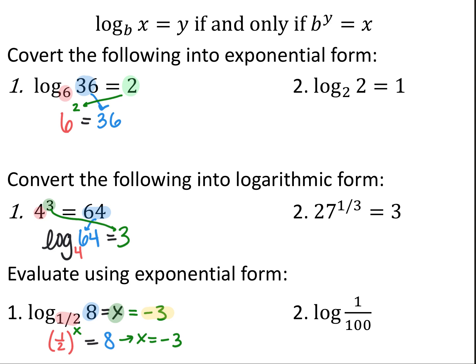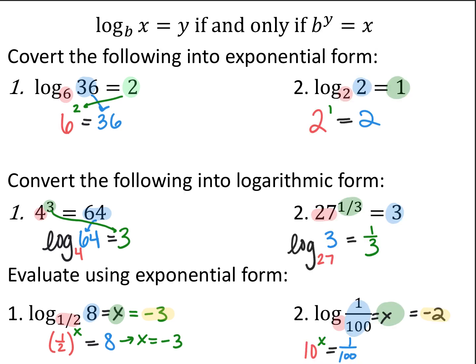Go ahead and try the other three. For the first one, we have log base 2 of 2 is equal to 1, and we want to convert that into exponential form. Base stays the same — base 2 — input and output switch, my 1 becomes my exponent, my 2 becomes my output. This is saying: what power do I have to raise 2 to in order to get 2? The answer is the first power — 2 to the first equals 2.